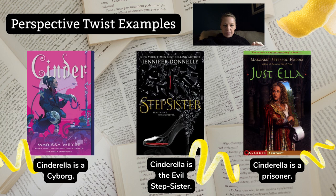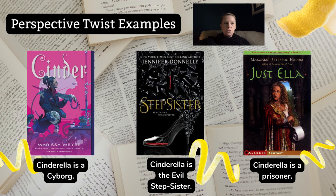The third example is Just Ella by Margaret Peterson Haddix, told in first person. In this one, Cinderella is a prisoner — she isn't a lucky girl who finally gets to live in the castle. She gets there and finds out the prince is dim-witted and dull, she doesn't actually like him, and she wants to leave but can't. By changing the character's dreams and personality, we've changed Cinderella's perspective and hopes, so the story has to follow a different path.